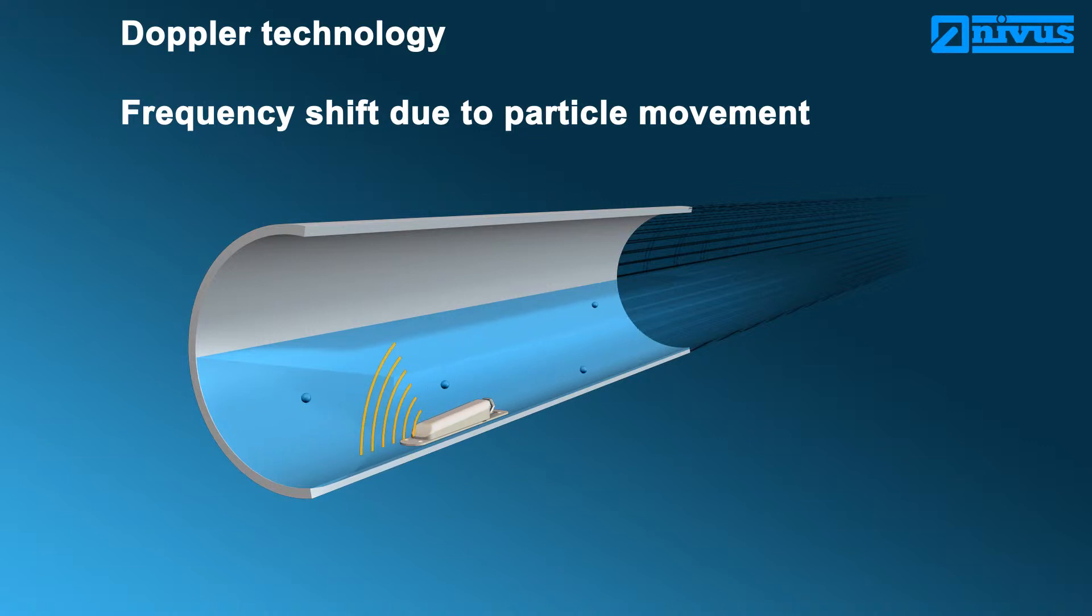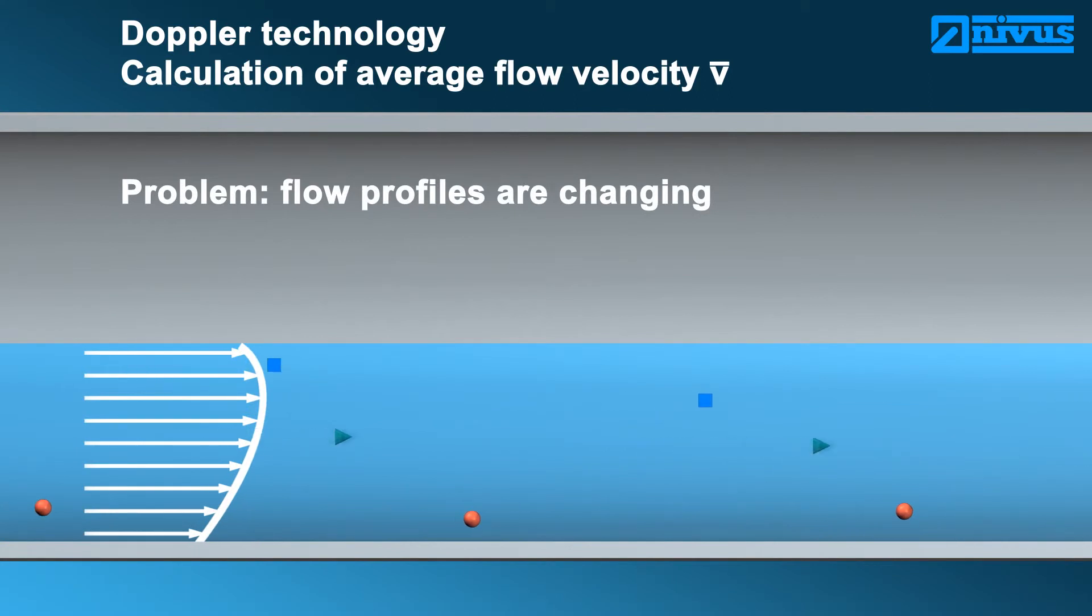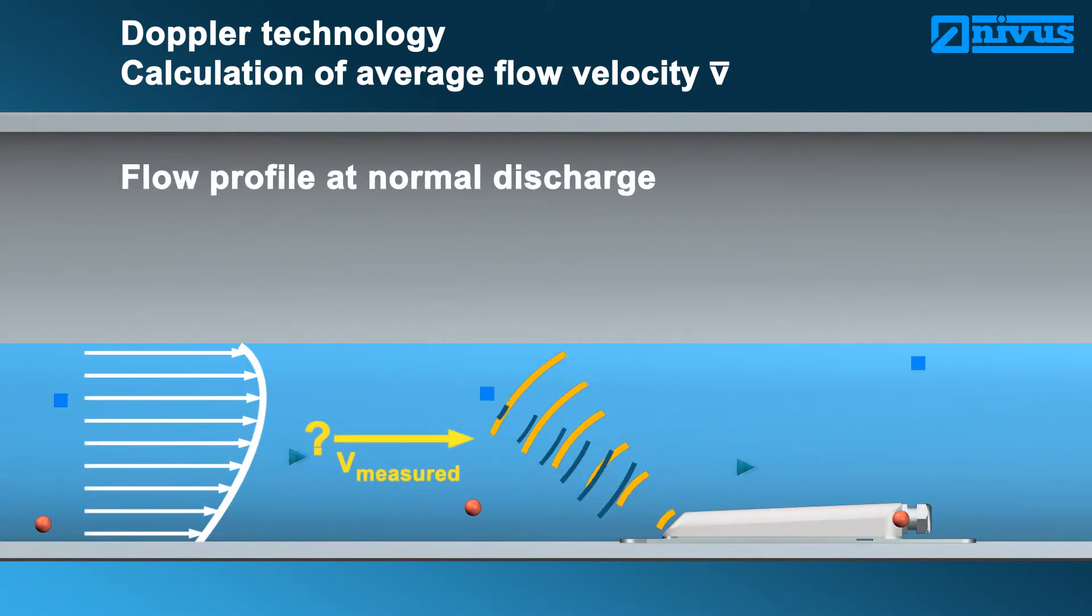The frequency shift is detected by the sensor. The greater the particle velocity, the greater the frequency shift. Doppler measurement is a spot velocity measurement. The sensor is not able to determine at which level the velocity has been detected. Due to this reason, the flow profile cannot be represented.